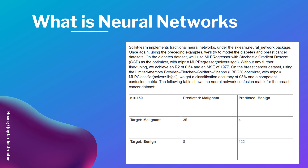Most of our predictions are correct. We predict malignant and the target malignant is around 35, with four predicted incorrectly. We also got eight wrong where the predicted was malignant but the target was benign, and we got 122 correct in the other class. This means most of our predictions are correct, reaching around 93% accuracy, which is a really good result. That is all for this video.